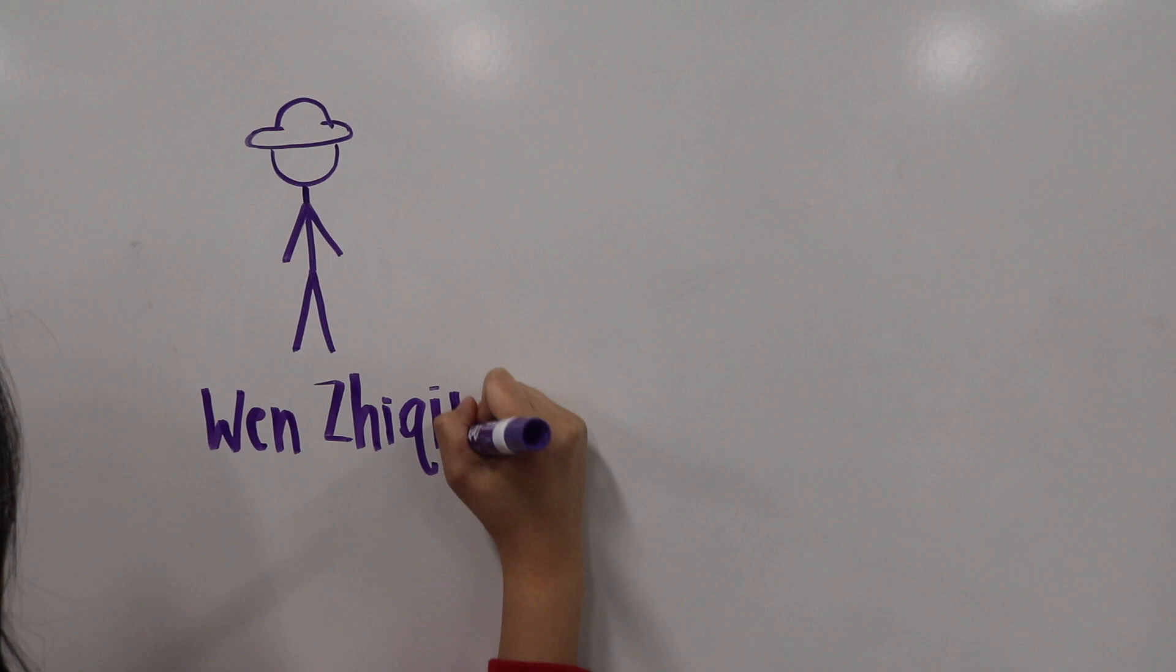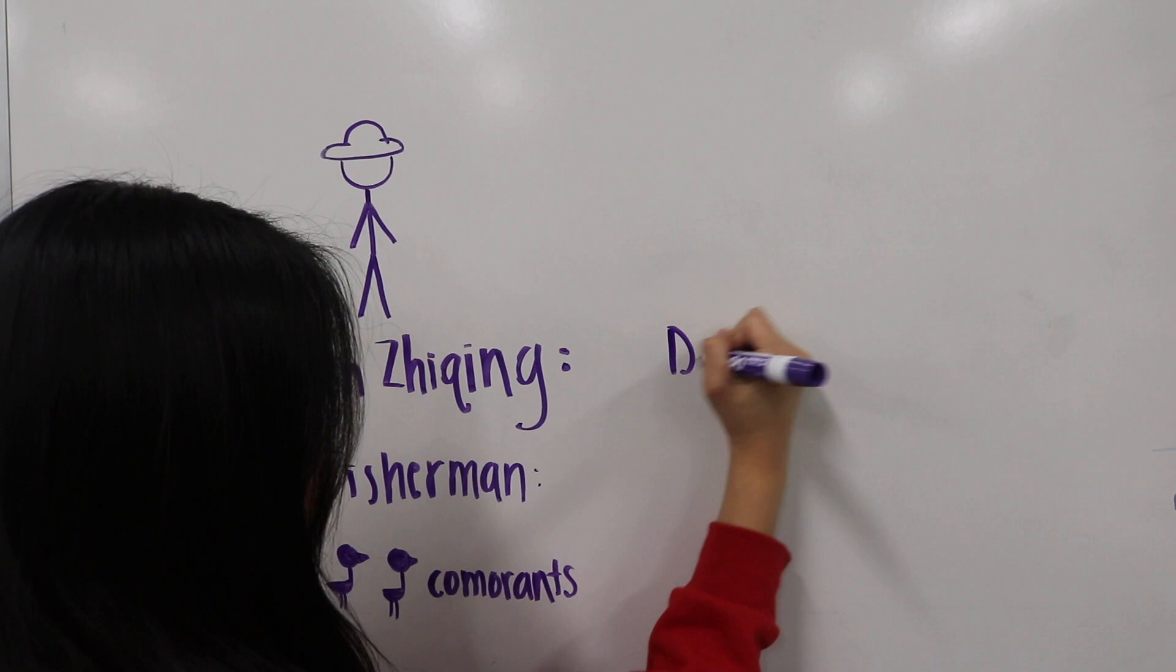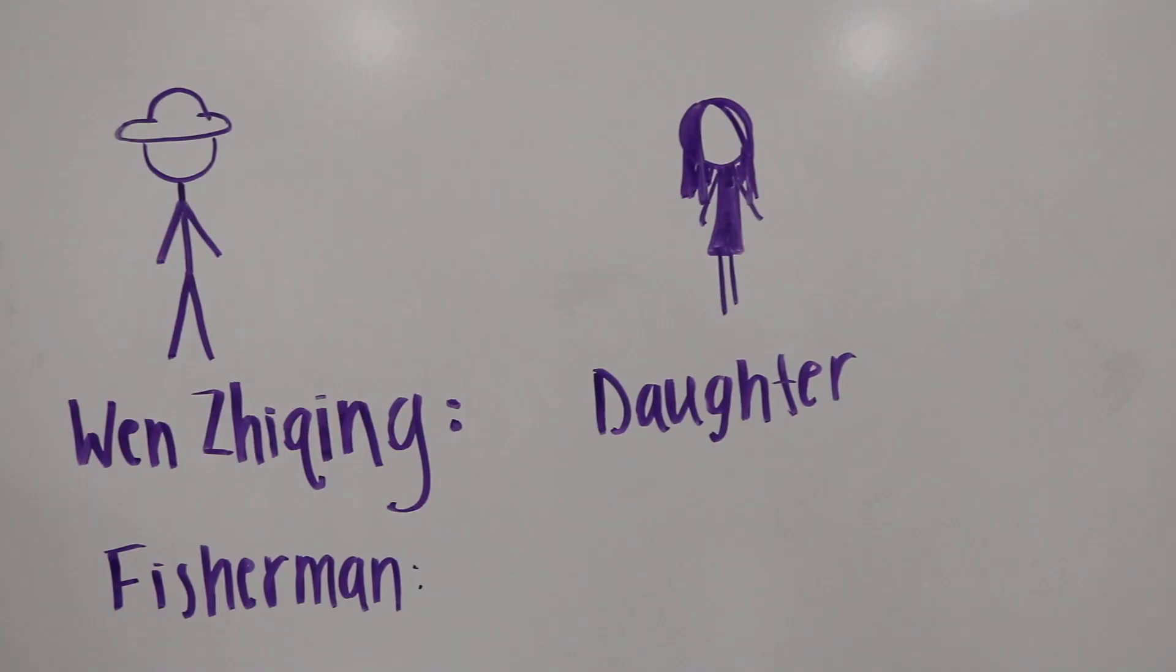In those days, there lived a fisherman named Wen Jingging, who trained cormorants, which were sleek black birds with long bending necks, to go into the water and catch fish.